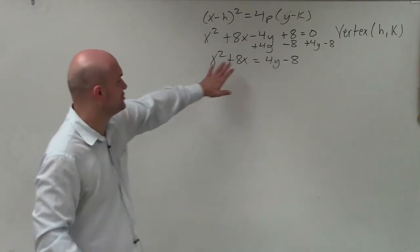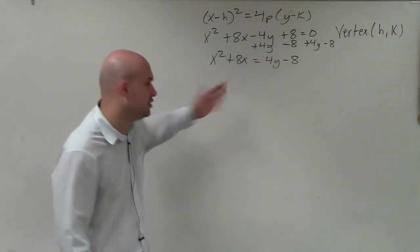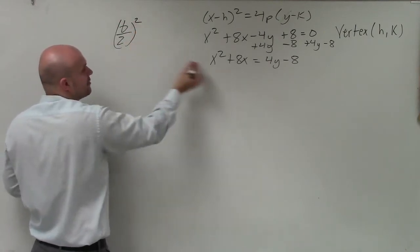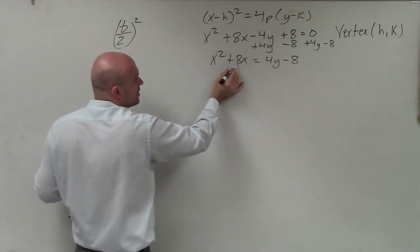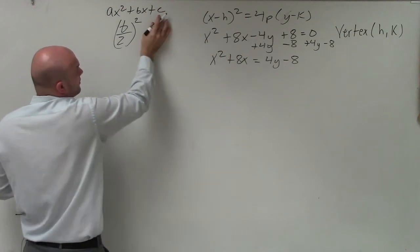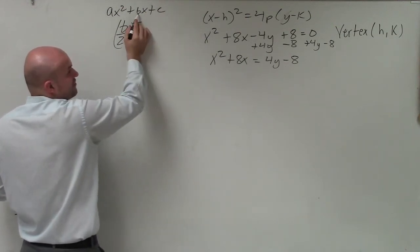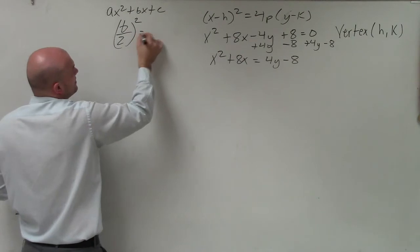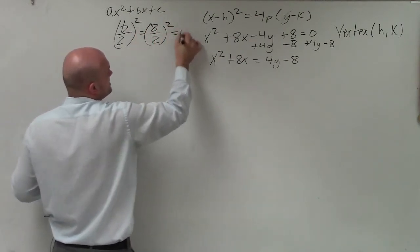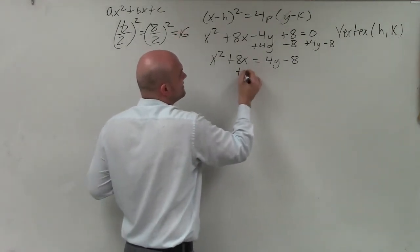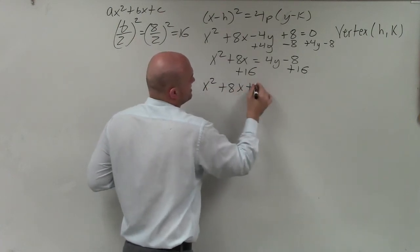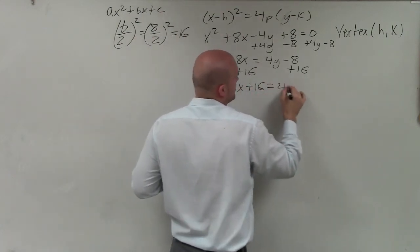Now I need to create a perfect square trinomial. To do that, I take b divided by 2 and square it. Remember, b is the coefficient of your linear term in ax squared plus bx plus c. We don't have a c in this case, but b is 8. So 8 divided by 2 is 4, and 4 squared is 16. Therefore, I'm going to add 16 to both sides, giving x squared plus 8x plus 16 equals 4y.